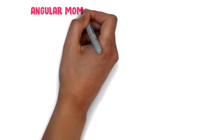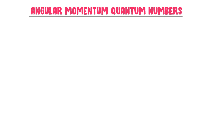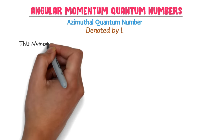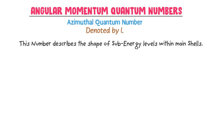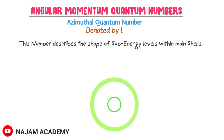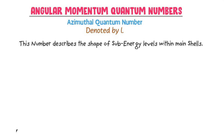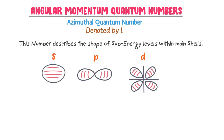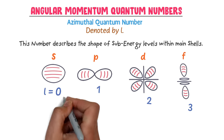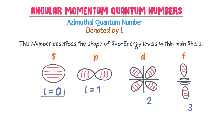The second quantum number is angular momentum quantum number, or commonly known as azimuthal quantum number. It is denoted by small l. This number describes the shape of sub energy levels or subshells within main shells. We know that there are four sub energy levels: s, p, d and f. We start counting sub energy levels from zero, one, two and three. So when l is equal to zero it is s subshell, when l is equal to one it is p subshell, when l is equal to two it is d subshell, and when l is equal to three it is f subshell.